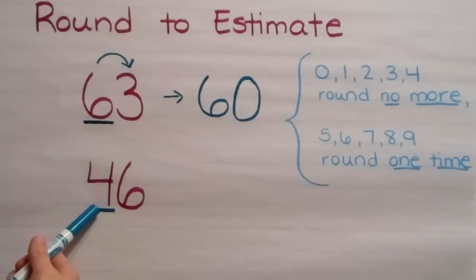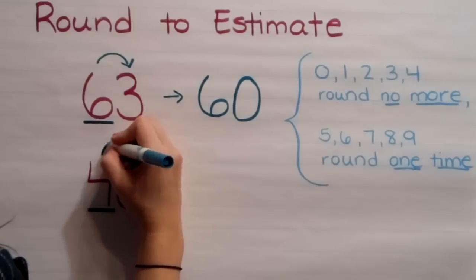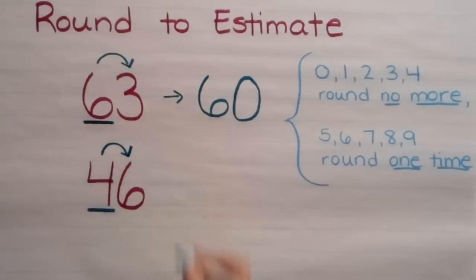The four is in the tens place, but the four doesn't know what to do. It could stay a four, or it could round one time to become a five. It has to turn around and ask the number right beside it what it should do.